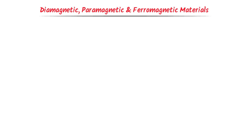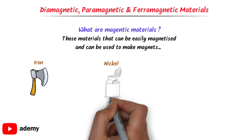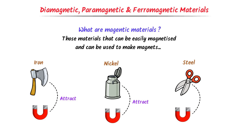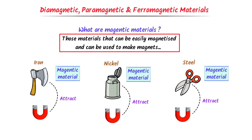Diamagnetic, Paramagnetic and Ferromagnetic Materials. Firstly, let me teach you what magnetic materials are. Those materials that can be easily magnetized and can be used to make magnets are called magnetic materials. For example, consider iron, nickel and steel. We know that a magnet attracts iron, nickel and steel. So iron, nickel and steel are magnetic materials. Just remember that materials that are easily magnetized are called magnetic materials.